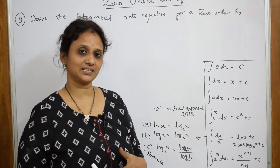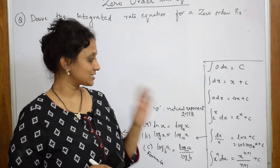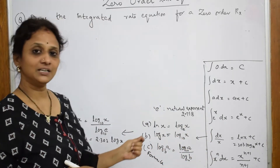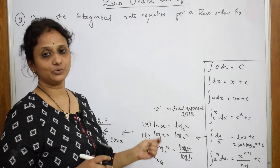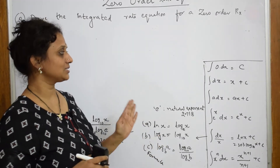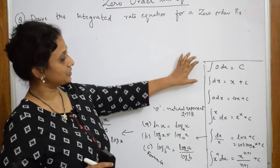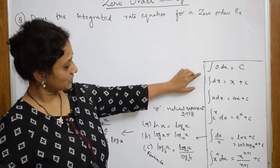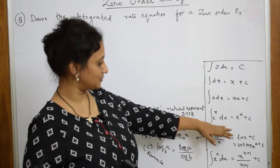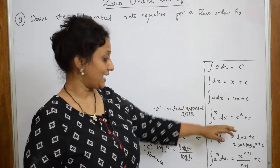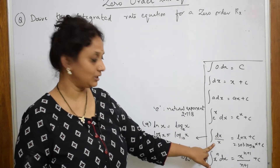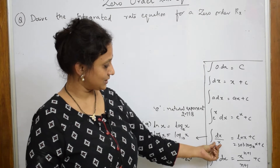Before starting with the zero order reactions, first note all these formulas which will be very useful for doing your rate order kinetics. So all the integration formulas — I have listed them out one after the other: first, second, third, fourth, and now the fifth one, which is very important.